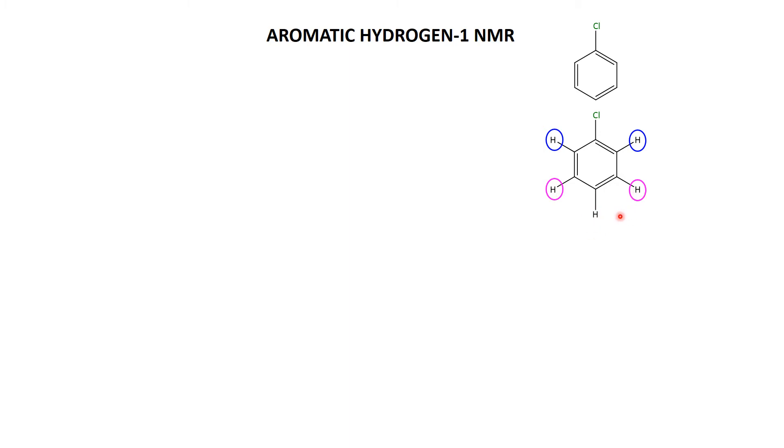And then of course there's the fifth one down here, the odd one out, the one in red, the one at the four position, the one that's on the carbon directly across from the chlorine carbon, however you'd like to describe it. So five hydrogens, three different types which we'll label Ha, Hb, and Hc.